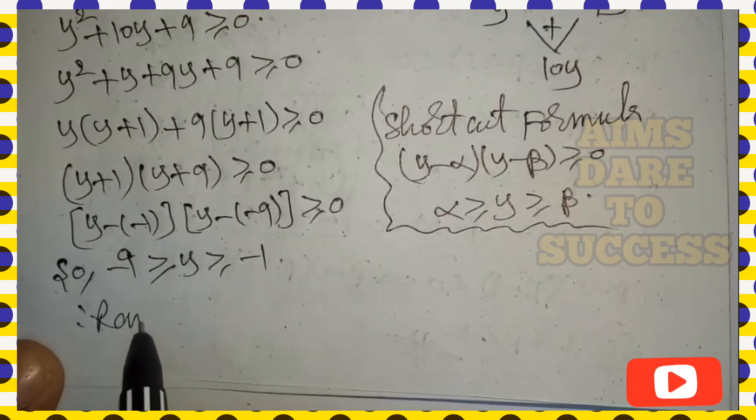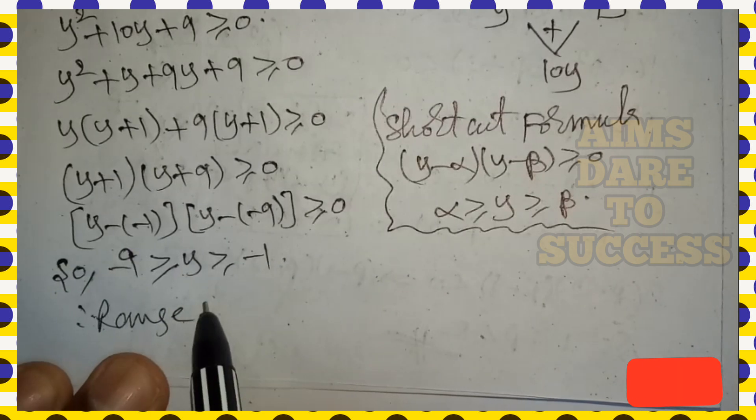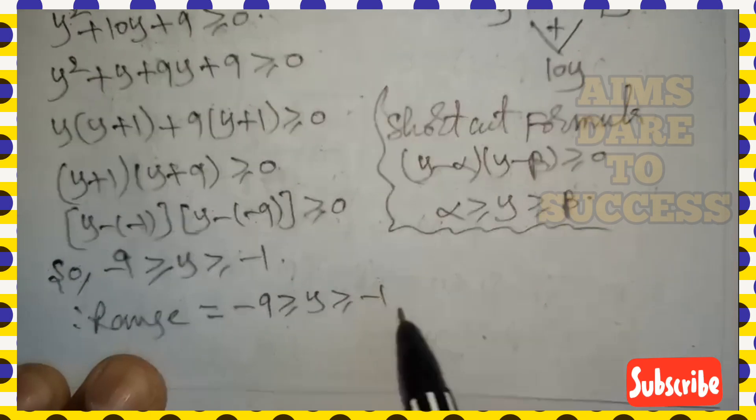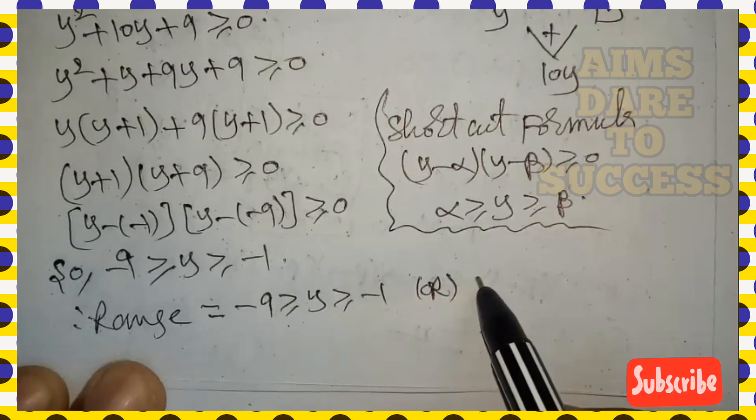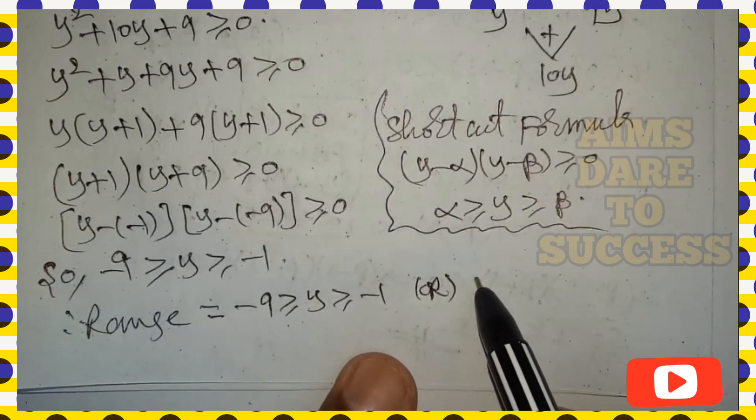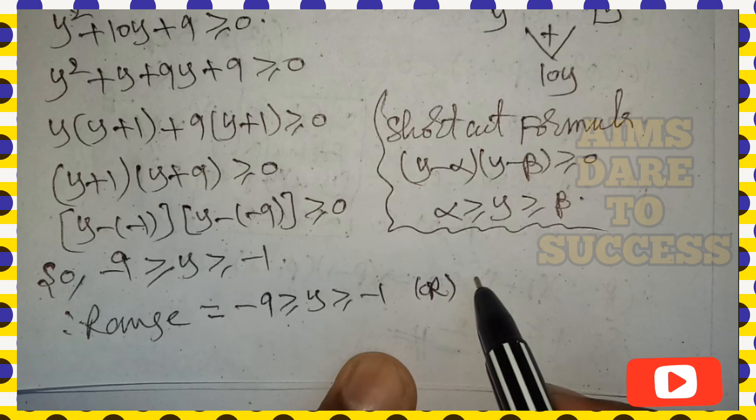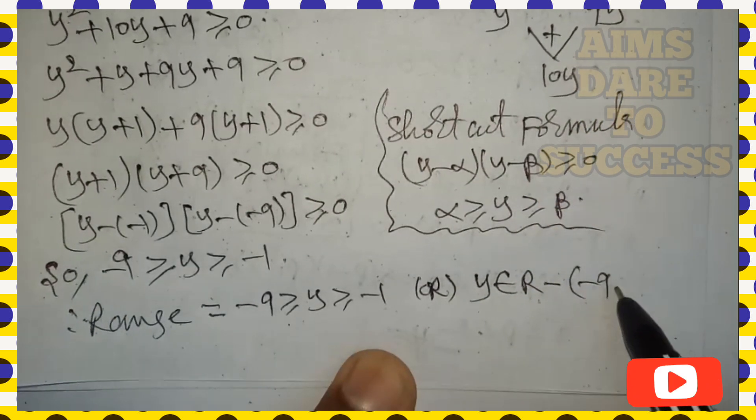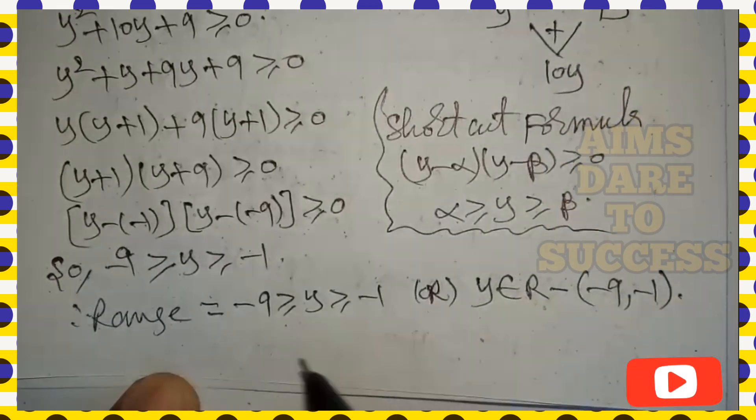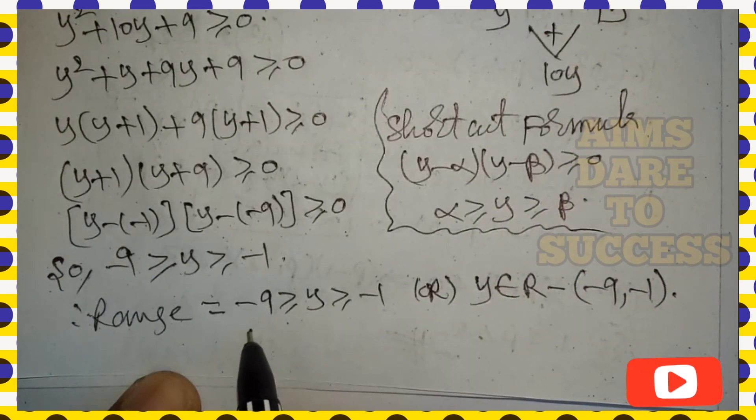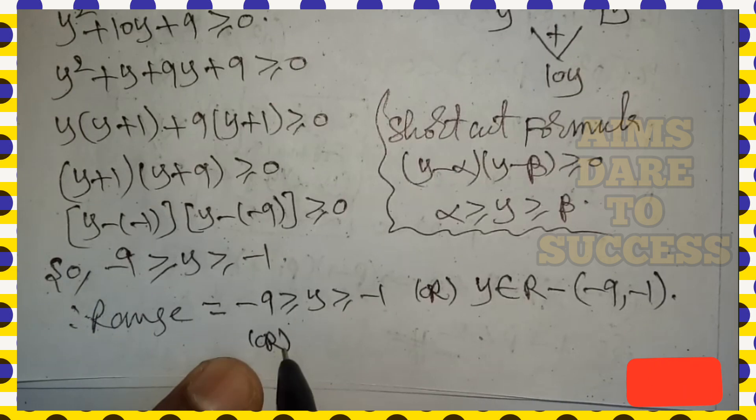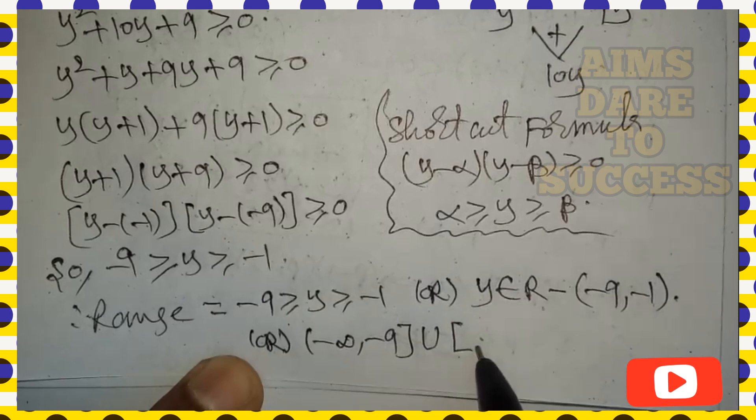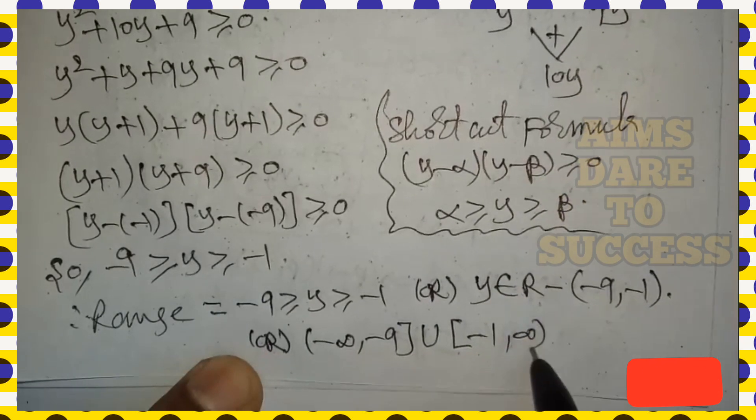So you can write this is the range: minus 9 is greater than or equal to y is greater than or equal to minus 1. Or this can be written as y belongs to R minus open interval (-9, -1). Or you can write like this: open interval minus infinity, closed interval minus 9, union, closed interval minus 1, open interval infinity. This is the answer.